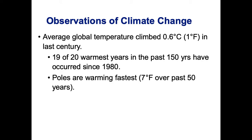The poles have warmed about 7 degrees Fahrenheit over the past 50 years, which is a lot more than the 1 degree that we've seen over the past century globally.